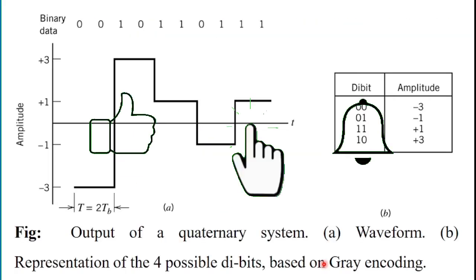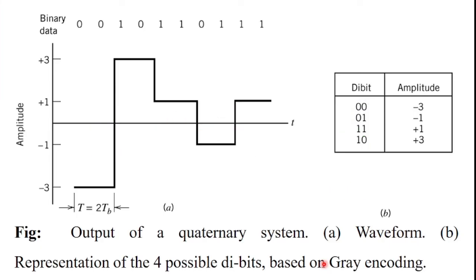In this diagram, this is the output of a quaternary system, and this is the waveform of the quaternary system. This table represents the representation of four possible di-bits based on gray encoding. Figure A shows the different amplitude levels of the gray code sequence, and figure B shows the electrical representation of the given binary data using an ordinary system.